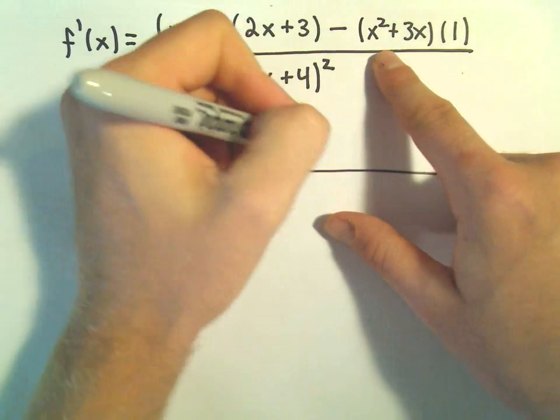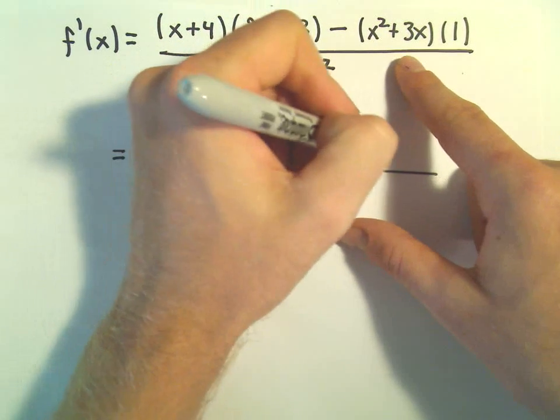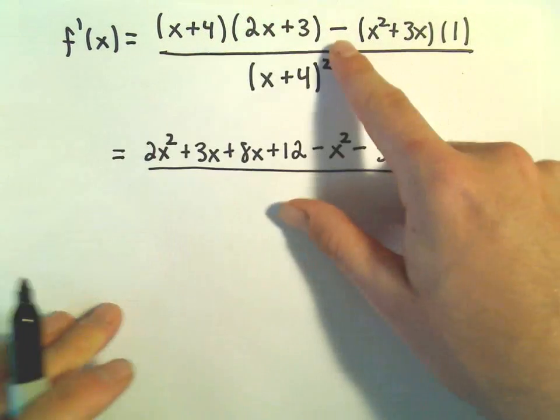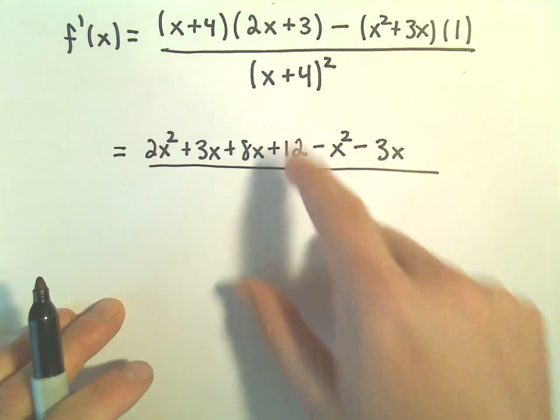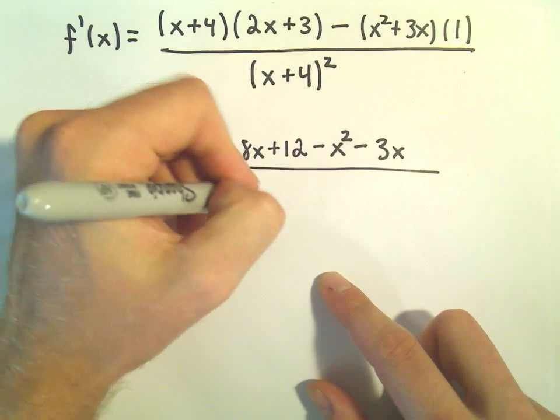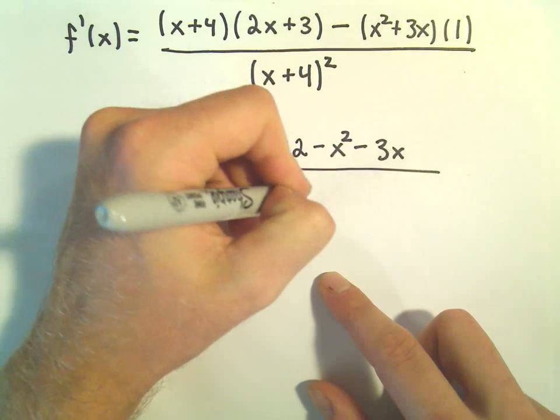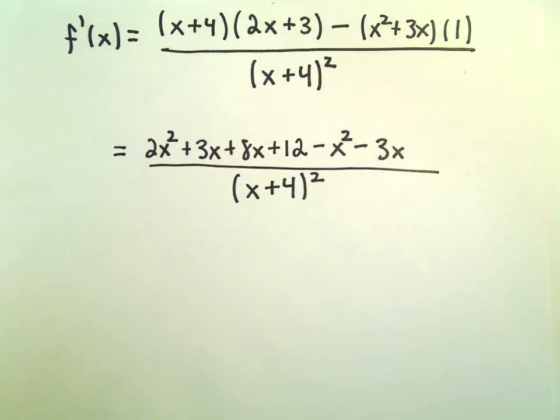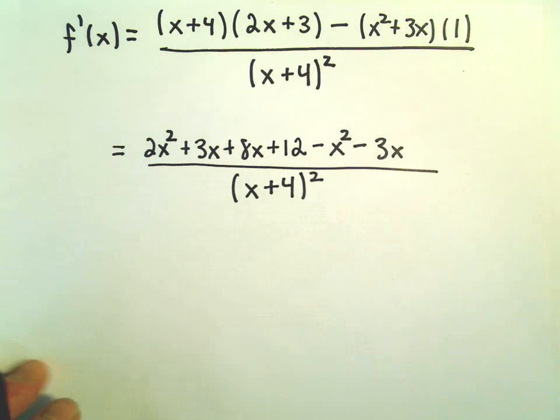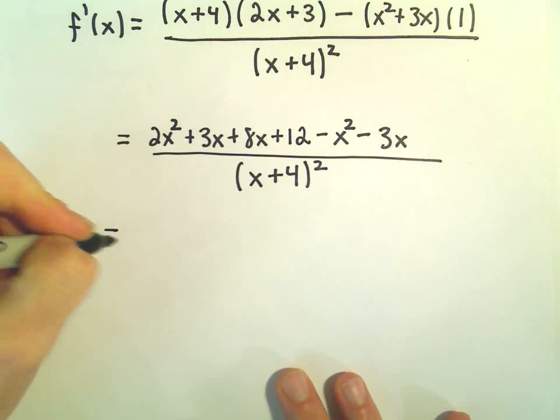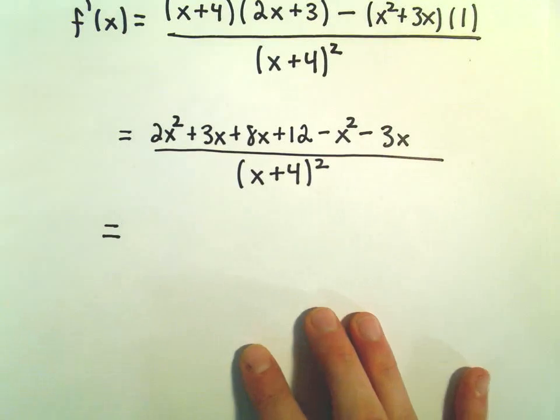And then we can subtract. We would have minus x squared minus 3x when we distribute the negative. Again, multiplying by 1 is not going to change anything. The denominator, I would not multiply this out at all. I would just leave it alone. Typically, it's good to have things factored. And if you multiply this out, you're in a sense unfactoring it. So unless I have a good reason to multiply it out, I just leave it alone.